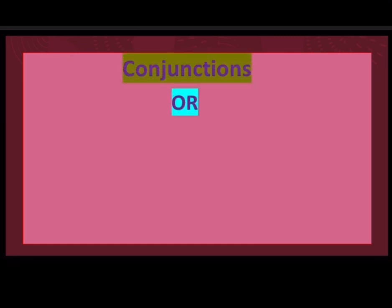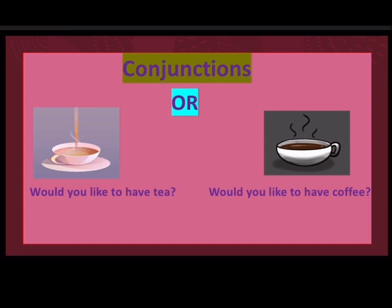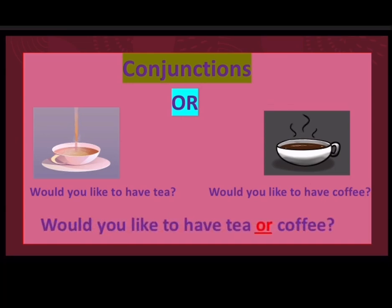Now look at the next conjunction, that is 'or.' Would you like to have tea? Would you like to have coffee? Would you like to have tea or coffee? We use the conjunction 'or' to join two words or sentences when we are given a choice. So, 'or' is a conjunction expressing the idea of choice.